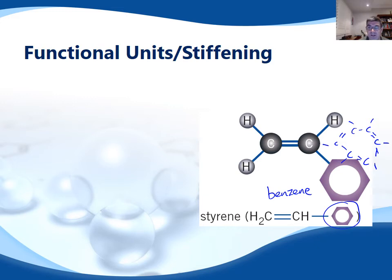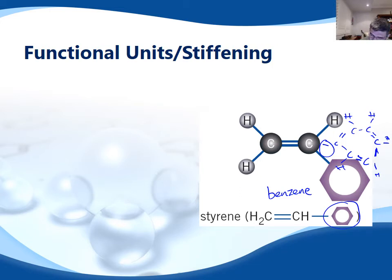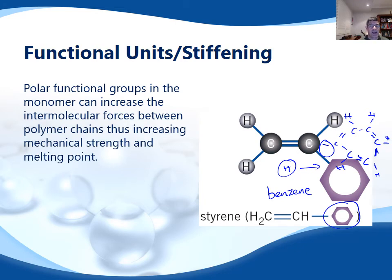Benzene is six carbons with alternating single and double bonds — all the remaining positions are hydrogens. One of those hydrogens has been substituted in order to attach to the carbon in the polymer chain. This changes the nature of the monomer and then also the polymer, resulting in additional functional groups which change the shape.